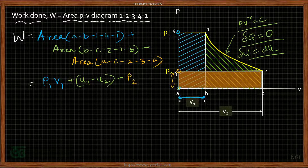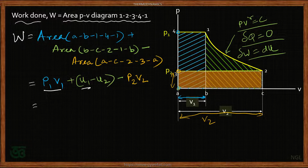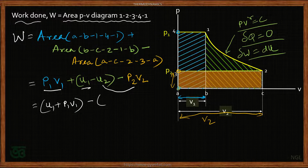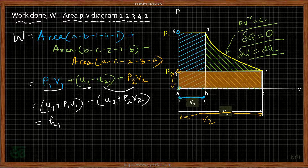Combining these parts, we can write: work done equals (u1 + p1·v1) minus (u2 + p2·v2). Now, u + pv is the specific enthalpy, so this becomes h1 minus h2 — enthalpy at state 1 minus enthalpy at state 2. This is called the heat drop or enthalpy drop during the expansion process.